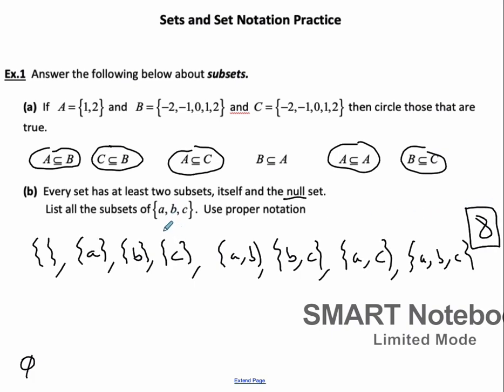In general, if you have N elements in a set, the number of subsets is actually 2 to the power of N.